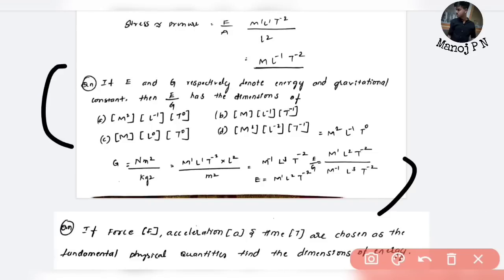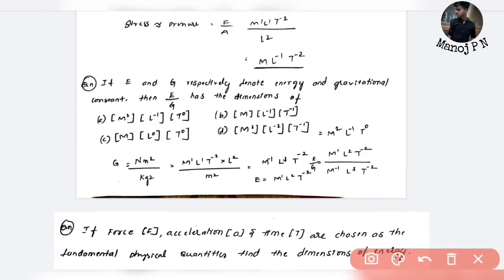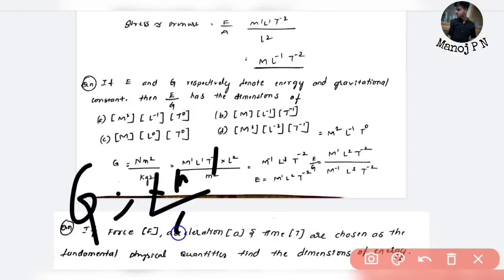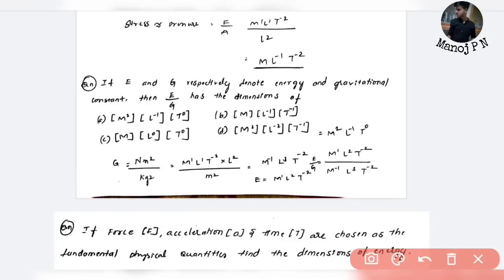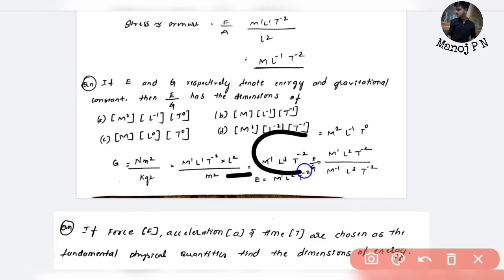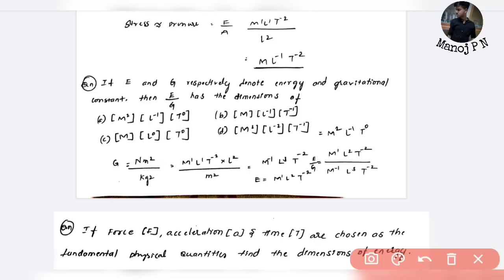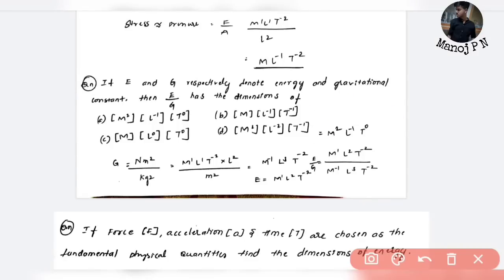If E and G respectively denote energy and gravitational constant, find the dimensions of E/G. Energy is M¹L²T⁻². For gravitational constant G: G has units Newton·meter² per kg², which gives M⁻¹L³T⁻². Dividing: E/G = (M¹L²T⁻²) / (M⁻¹L³T⁻²) = M²L⁻¹T⁰. That is your answer.